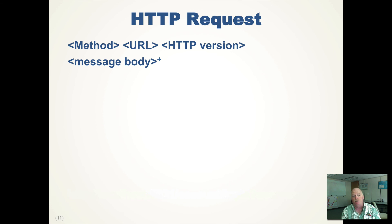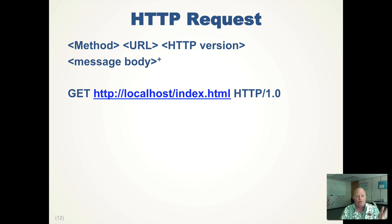So what is an HTTP request? It's a string — very simple. It has an HTTP request method, a space, the URL to the resource that we're requesting, a space, and then the HTTP version we are talking on. Then there is an optional message body in the request. For example, we could say: GET HTTP localhost index.html — that's the URL we're getting, a resource we would like to get — and we are talking in HTTP 1.0.